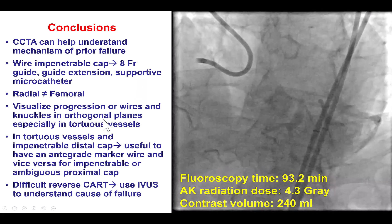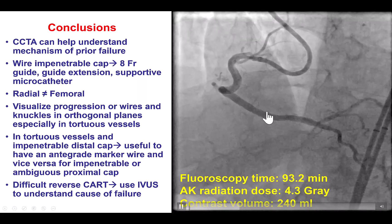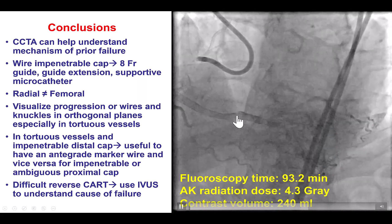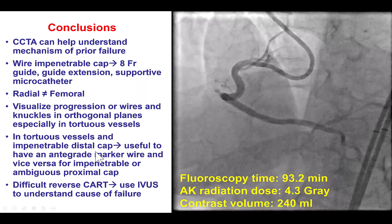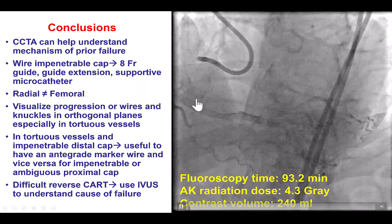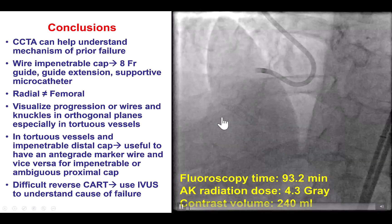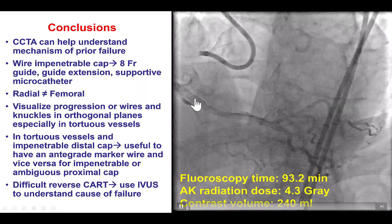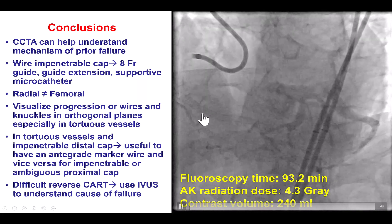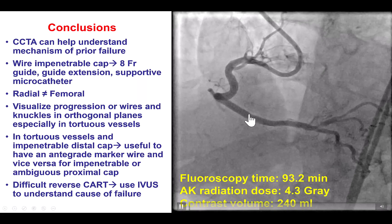When trying to advance guide wires, looking at the wire course in orthogonal projection is critical, as it helps identify where the wire takes the wrong turn. Here, the retrograde wire took a different course than the vessel, and the RAO projection helped redirect it. Having an antegrade marker wire — a knuckled Gladius Mongo — was very useful as a target for the retrograde equipment. Finally, when reverse CART was difficult, IVUS revealed the opposite wire positions than anticipated: the antegrade was intraplaque and the retrograde was extraplaque. The solution was a larger 4 mm balloon based on IVUS, allowing successful completion of reverse CART.